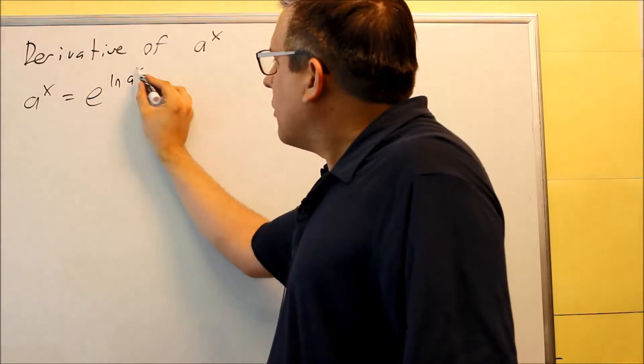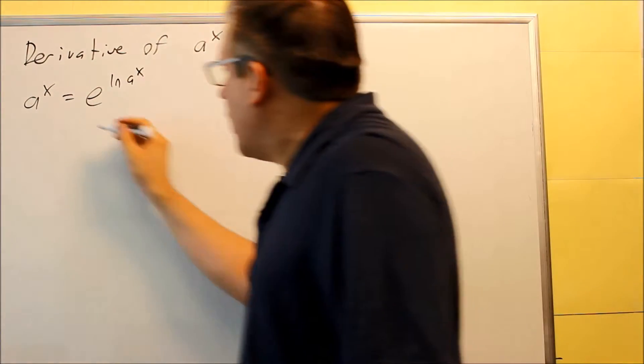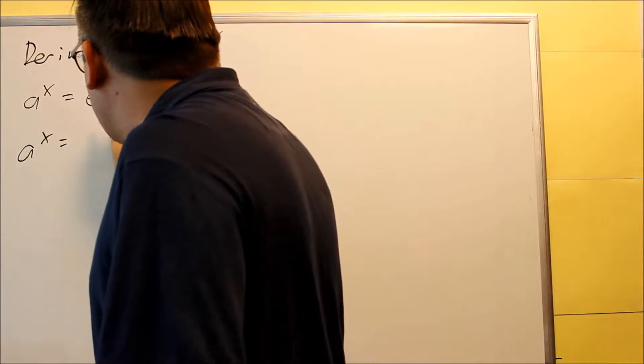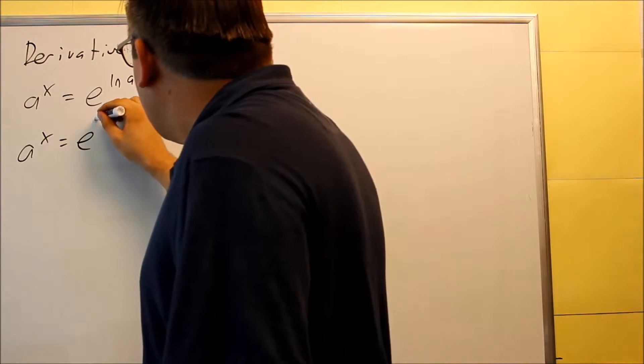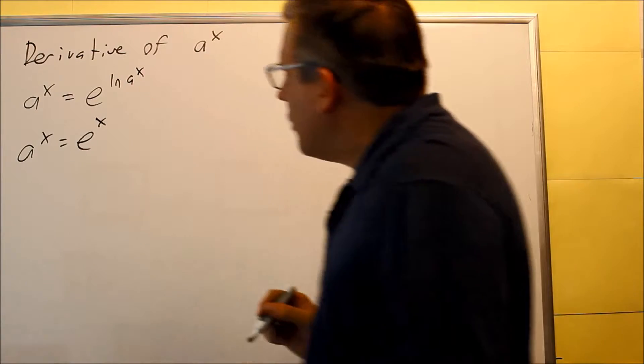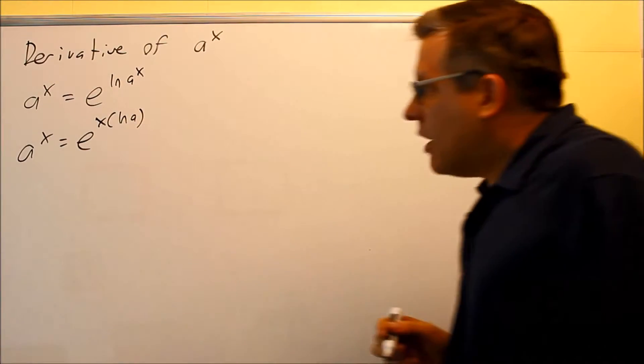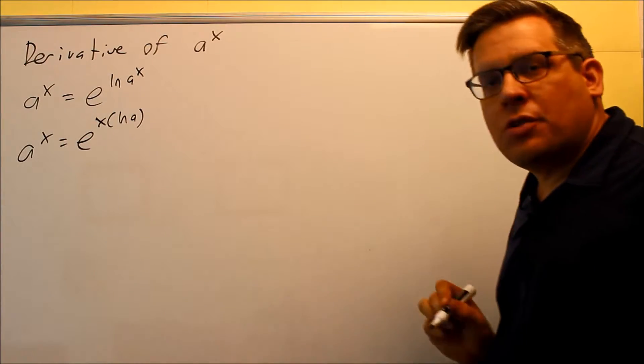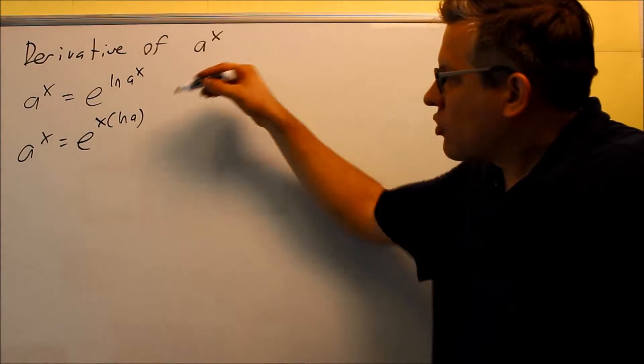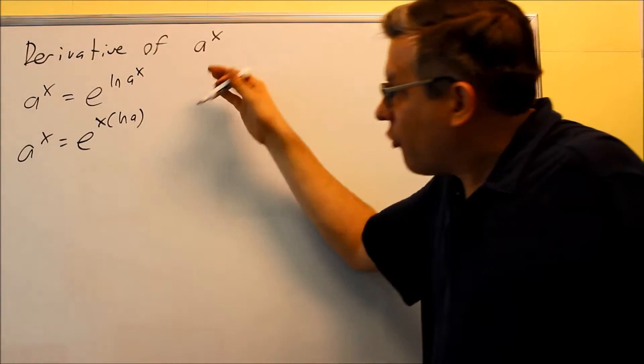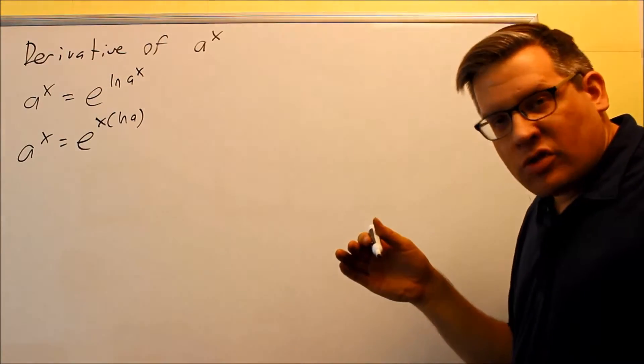Then what I can do is the x I can bring down in front of the ln, so a to the x is equal to e to the x is going to come down in front, and then I have ln a. So now I have both of these will be the equivalent form. So this is what I'm going to do now, this is the formula I want in order to take the derivative of both sides.